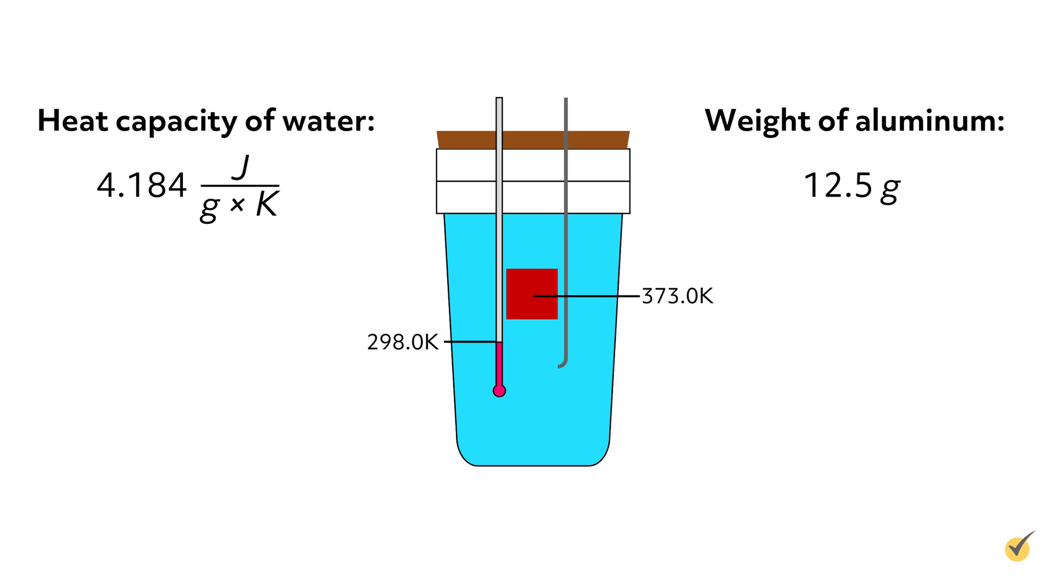The aluminum releases heat, which is then absorbed by the water, until both water and aluminum reach thermal equilibrium. Using the thermometer, we can see that the temperature of the water has increased from 298 to 299.7 kelvin, which means the aluminum decreased from 373 kelvin to 299.7 kelvin.